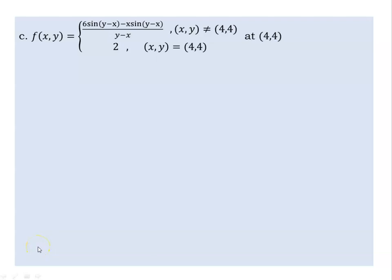What are the first steps? We have 4xy plus 6 times sine of (y minus x) minus x times sine of (y minus x). This function is the expression we are evaluating at xy, specifically at the point (4,4).